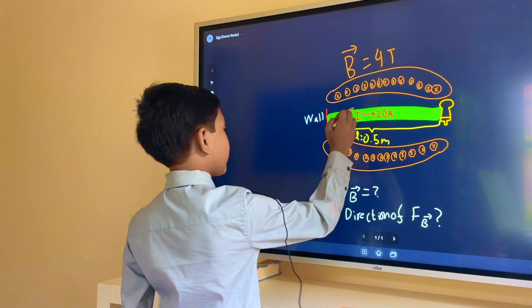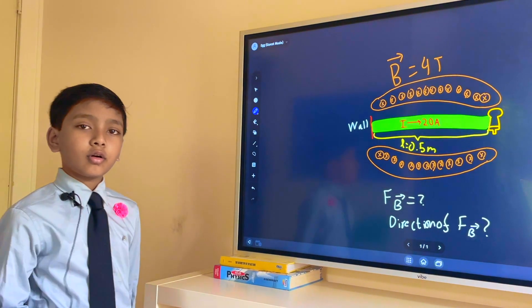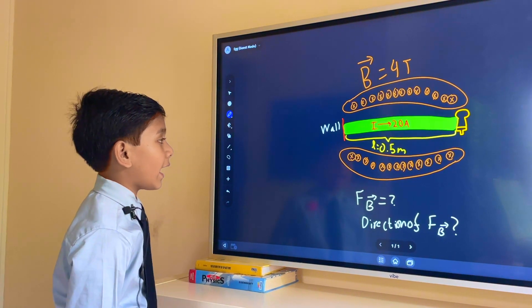This green thing is our wire. These orange x's are our magnetic field and that's basically our diagram right now.